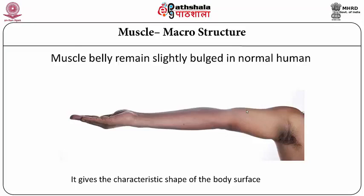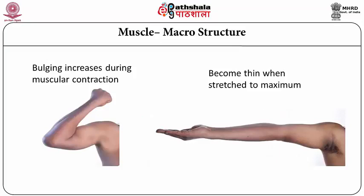If the muscle bulk is more, the bulging is more, like in bodybuilders. However, this bulging increases during muscle contraction. Here in this picture you can see that the elbow has been flexed and the biceps muscle has bulged out. When the person has stretched the arm to maximum, the bulging is almost gone.